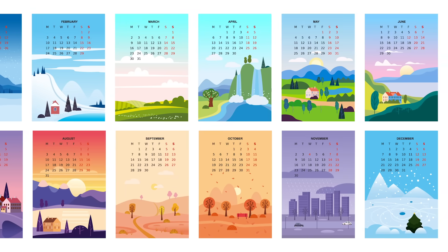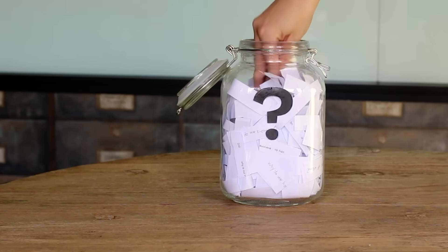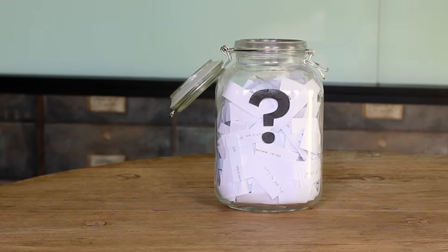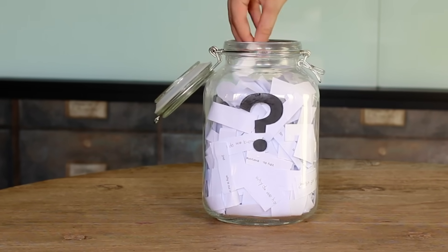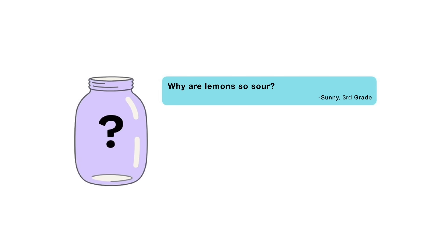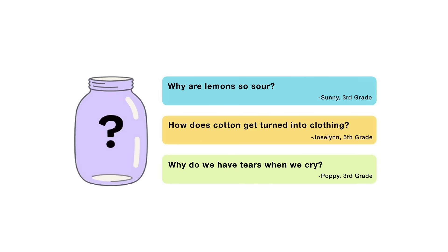That's all for this week's question. Thanks, Sire, for asking it. For the next episode, I reached into my question jar and picked out three questions that I'm thinking about answering next. When this video is done playing, you'll get to vote on one. You can choose from: why are lemons so sour? How does cotton get turned into clothing? Or, why do we have tears when we cry? Submit your vote when the video is over. I want to hear from all of you watching. There are mysteries all around us. Stay curious, and see you next week.